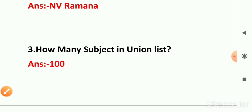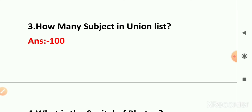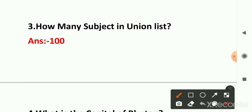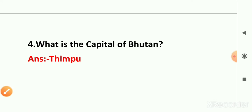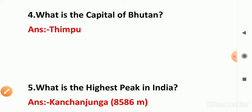Third question: how many subjects are in the Union List? There are a total of 100 subjects in the Union List, so if your option is 100, that is the correct answer. Fourth question: what is the capital of Bhutan? The capital of Bhutan is Thimphu. Thimphu is the right answer.